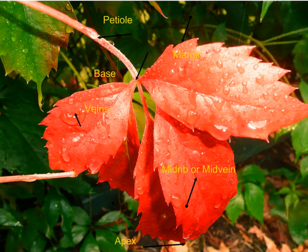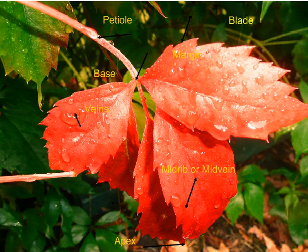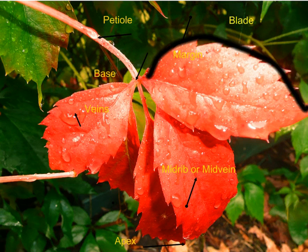The last part we have is the blade. When we talk about the blade, it's just like when we're talking about a blade of grass, and that's basically the whole section there. That is what I'm referring to when I'm talking about the blade — the whole part of the leaf.